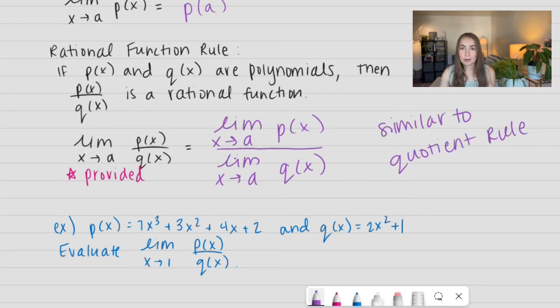However, there is another requirement with this and it's the fact that we cannot divide by 0. Since we cannot divide by 0, it has to be provided that the limit as X approaches A of Q of X does not equal 0. Again, dividing by 0 is illegal, so let's go ahead and make sure we don't do that.